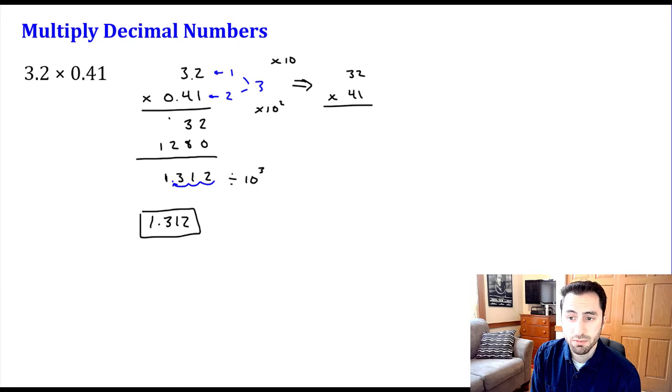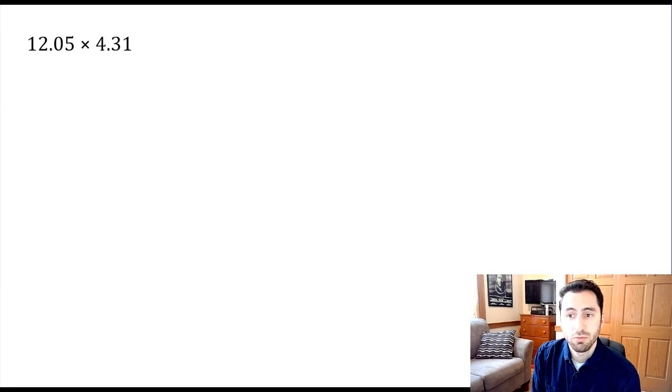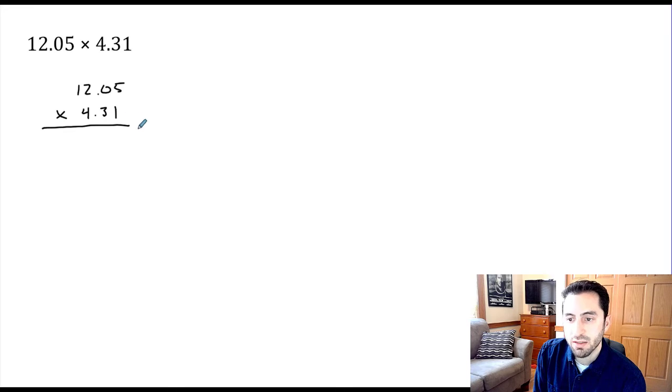So let's try one more example, a little bit more complicated, get some more numbers here. So again, first thing, we'll rewrite this vertically. So 12.05 times 4.31. And just like on the last one, we're going to treat these as if they're whole numbers first.